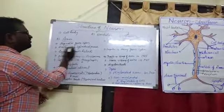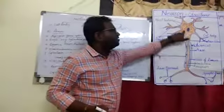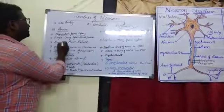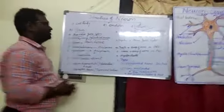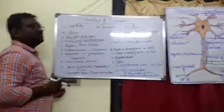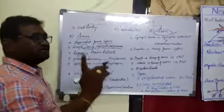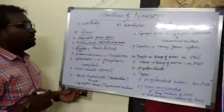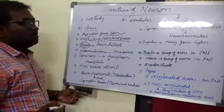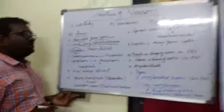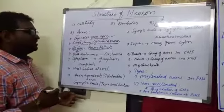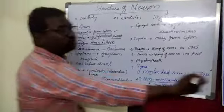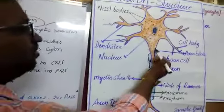Axon originates from the cyton. It is a single long cylindrical process, and every neuron has only a single axon. The region from the cyton where the axon originates is called as the axon hillock.